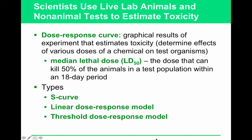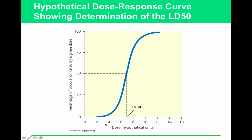An important concept is the linear dose-response curve, with or without a threshold. LD50 is the median lethal dose — the dose that kills 50% of animals in a test population within an 18-day period. Types of dose-response curves include an S-curve, a linear curve, and one with a threshold. To read an LD50 graph: go to 50% on the y-axis (percentage of population killed), draw a line across to where it hits the curve, then drop down to read the dose. This is how we measure and compare the toxicity of different substances.